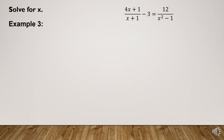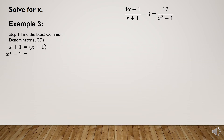The denominators are (x + 1) and (x² - 1). Step 1: Find the LCD by writing the factored form of each denominator. Since (x + 1) is not factorable, we write it as is. Then x² - 1 factors into (x + 1)(x - 1). So the LCD is (x + 1)(x - 1).